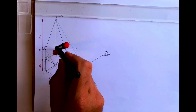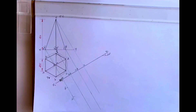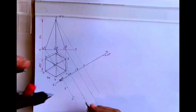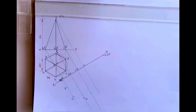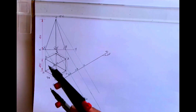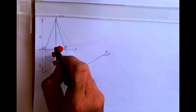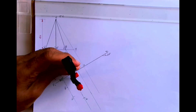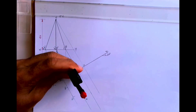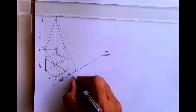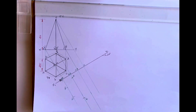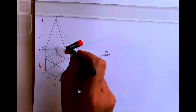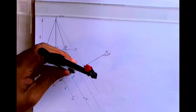Now XY to B — so X1Y1 to B. We are transferring the width. Then point E the same way. Similarly, XY to C and XY to D — we cut from X1Y1 to get C and D.